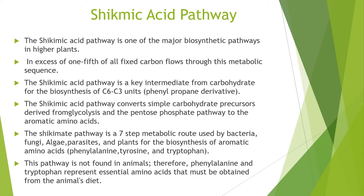The shikimate pathway is a seven-step metabolic route used by bacteria, fungi, algae, parasites, and plants for the biosynthesis of aromatic amino acids, i.e., phenylalanine, tyrosine, and tryptophan. This pathway is not found in animals.